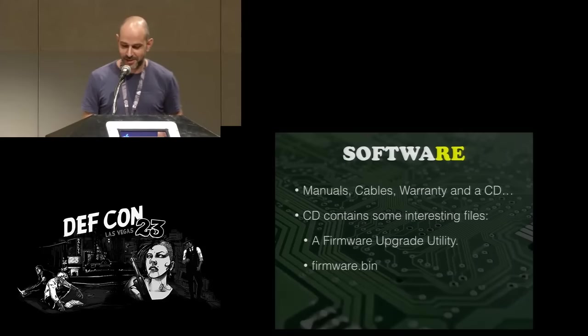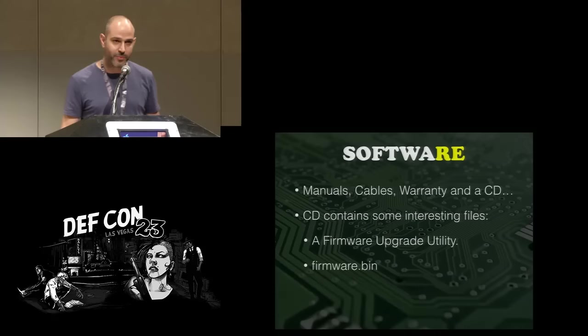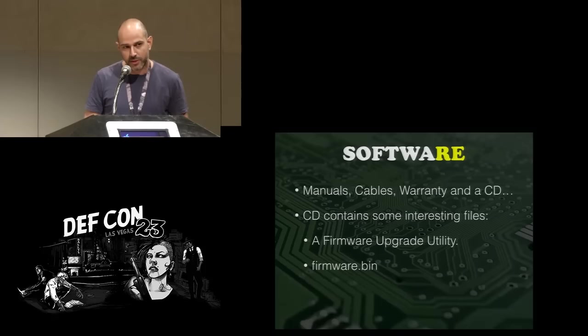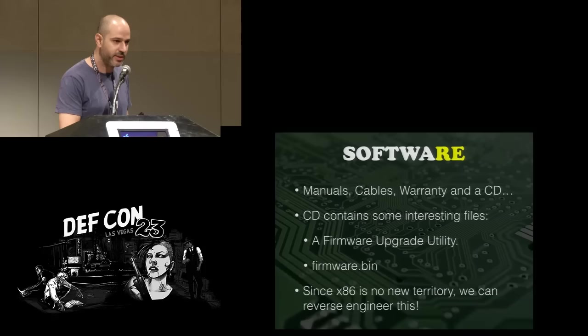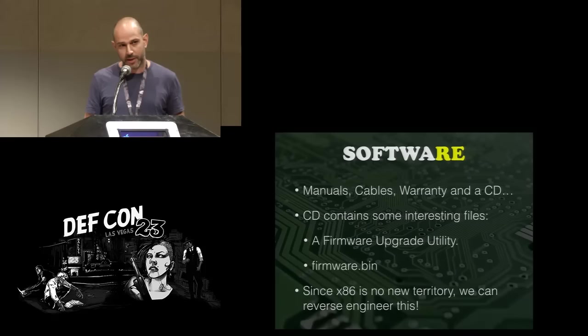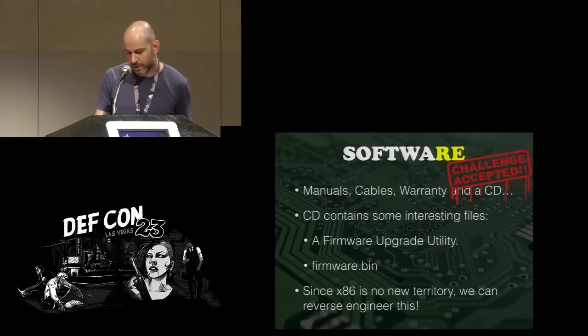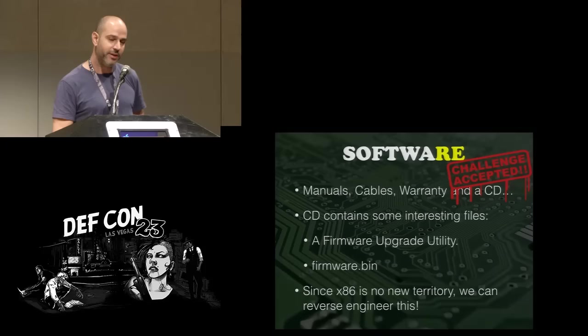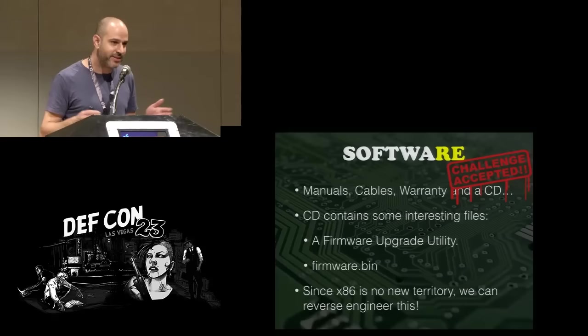This firmware.bin file had a really high entropy level, so it was probably compressed. But we couldn't really decompress it with any method we tried. Both me and Lior are pretty advanced x86 guys, and since the firmware upgrade utility runs on Windows, we said we can probably try to reverse engineer it and try to extract the firmware out of it. When we tried to statically analyze the firmware upgrade utility, it turned out not to be such an easy task — we figured out that this utility is actually used to upgrade the entire line of KVMs. It contains like thousands of functions, and on top of all that, it's C++ code full of V-tables — a really messy thing we didn't really want to mess around with.